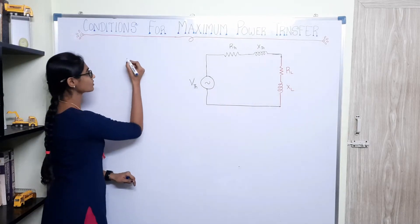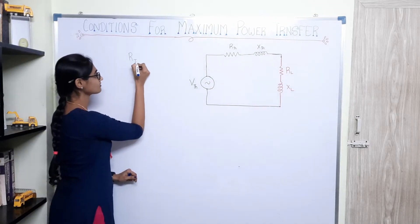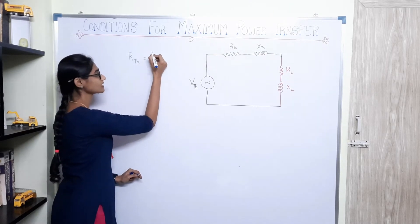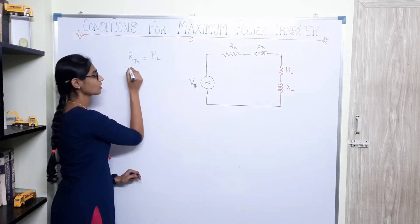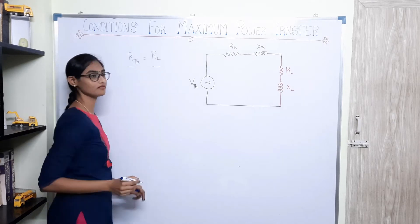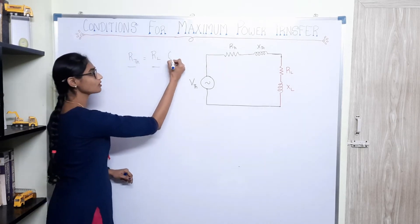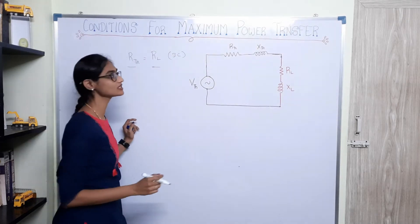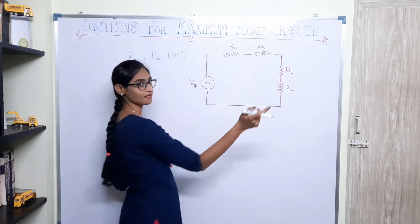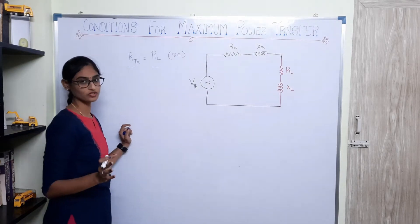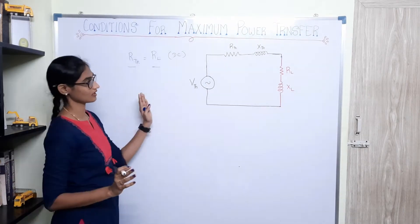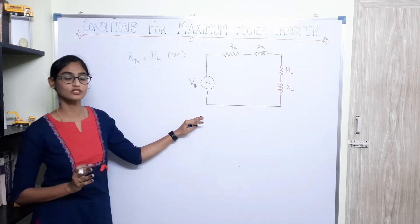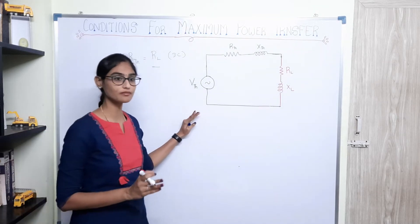In the previous video, we saw that the impedance resistance of the source should be the same as the load's resistance — only then maximum power will be transferred. This holds good only for DC circuits. When you have AC circuits, we have impedance and capacitance. In that case, what we should do is write the equation for power for those loads and then find out the condition at which maximum power occurs.